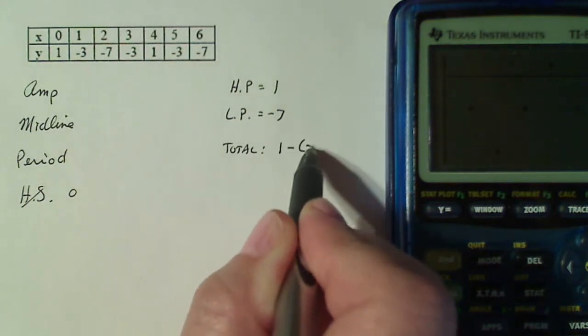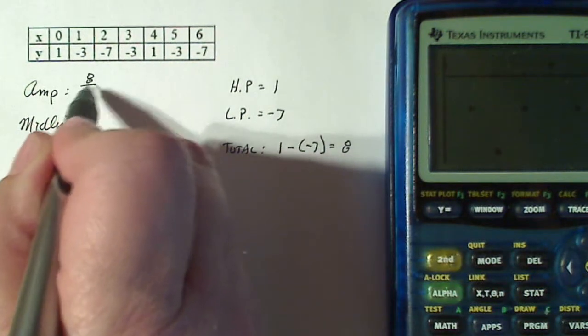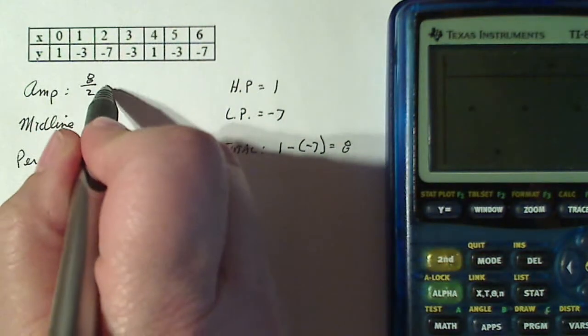So if I take the total distance between the high and low point, that's going to be one minus minus seven, which is eight. And the amplitude is going to be half of that, which is four.